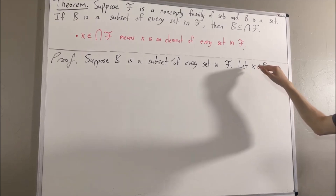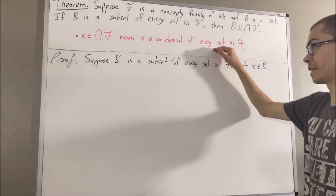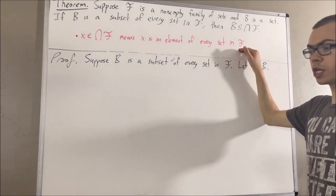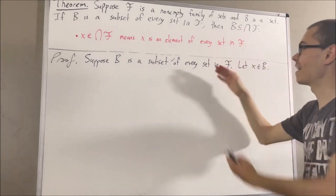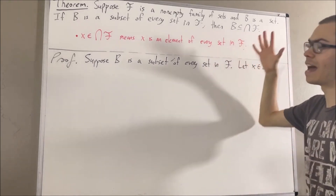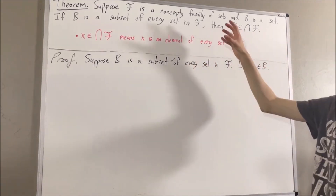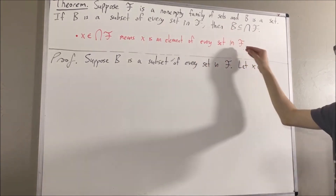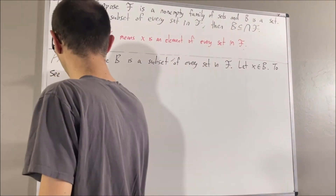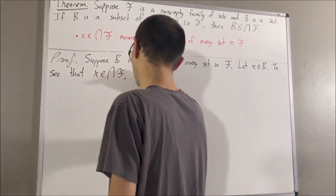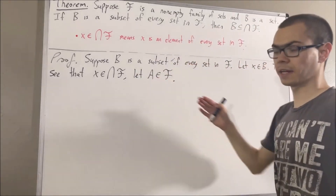More precisely, to prove that x is an element of every set in f, we're really trying to show that for all sets a in f, x is an element of a. So give me an arbitrary set in f — I'll call it a.